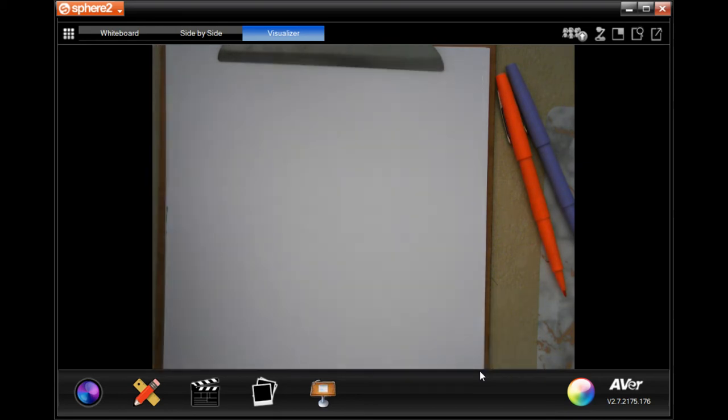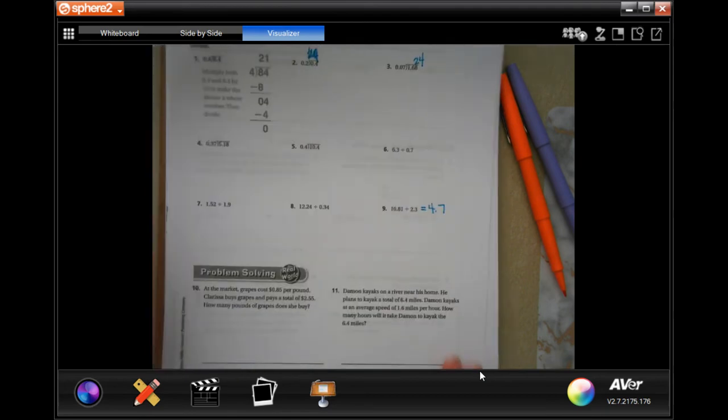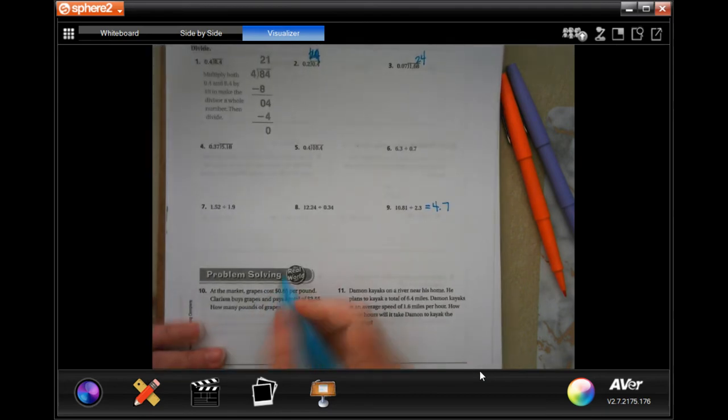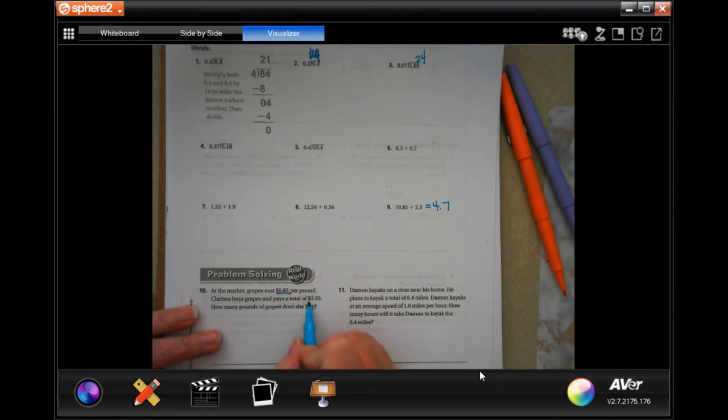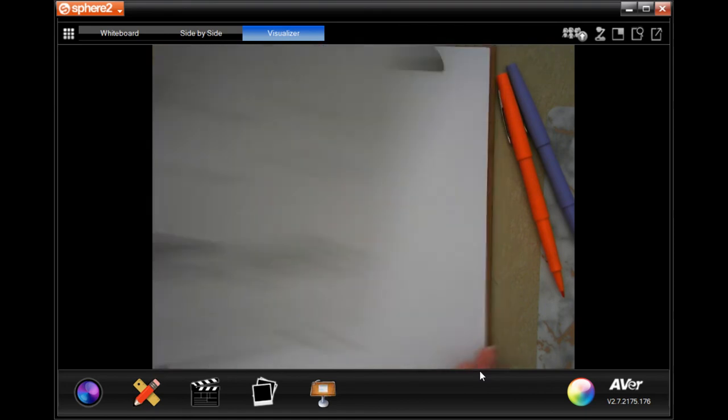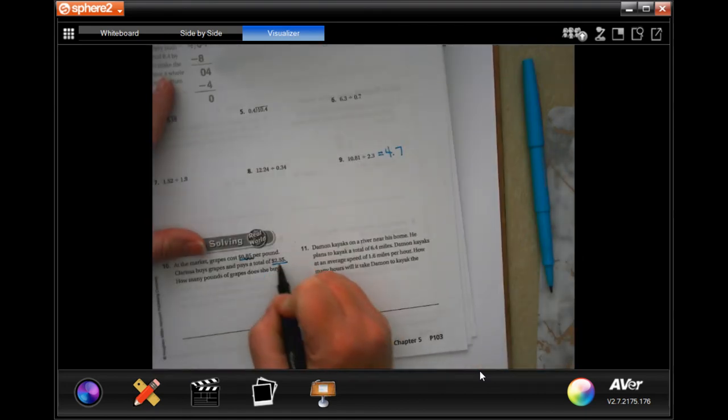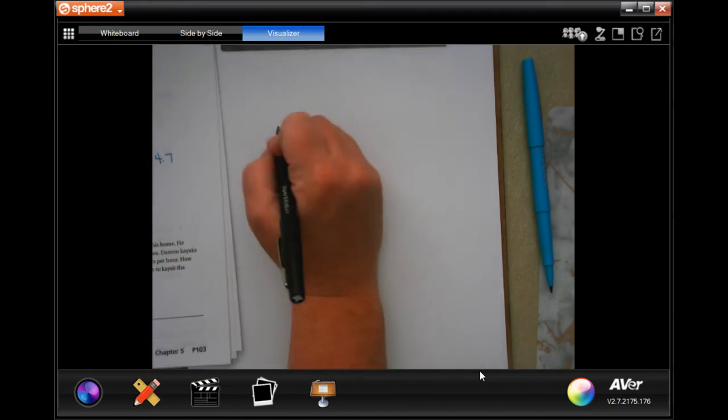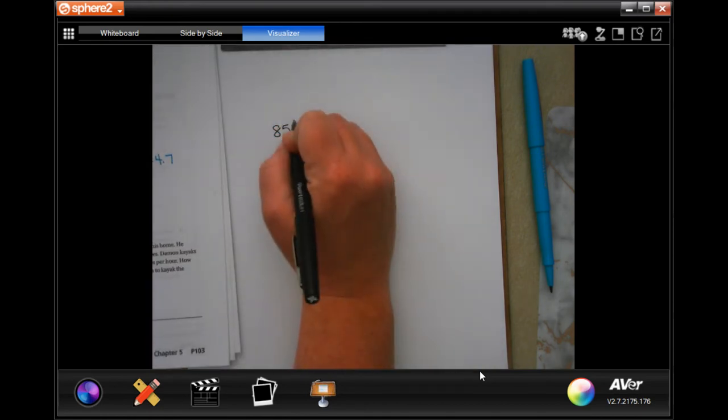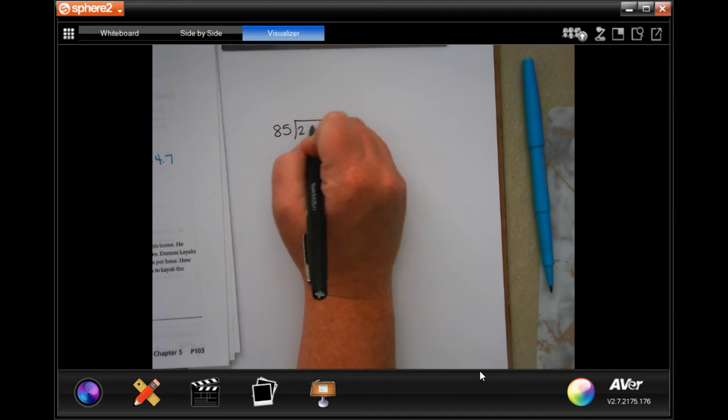We are going to go down to number 10. And it says at the market, grapes cost 85 cents per pound. Of course, it buys grapes and pays a total of $2.55. How many pounds of grapes did you buy? So I'm going to move that decimal one, two times, and one, two times. So now I'm going to have 85 into 255.